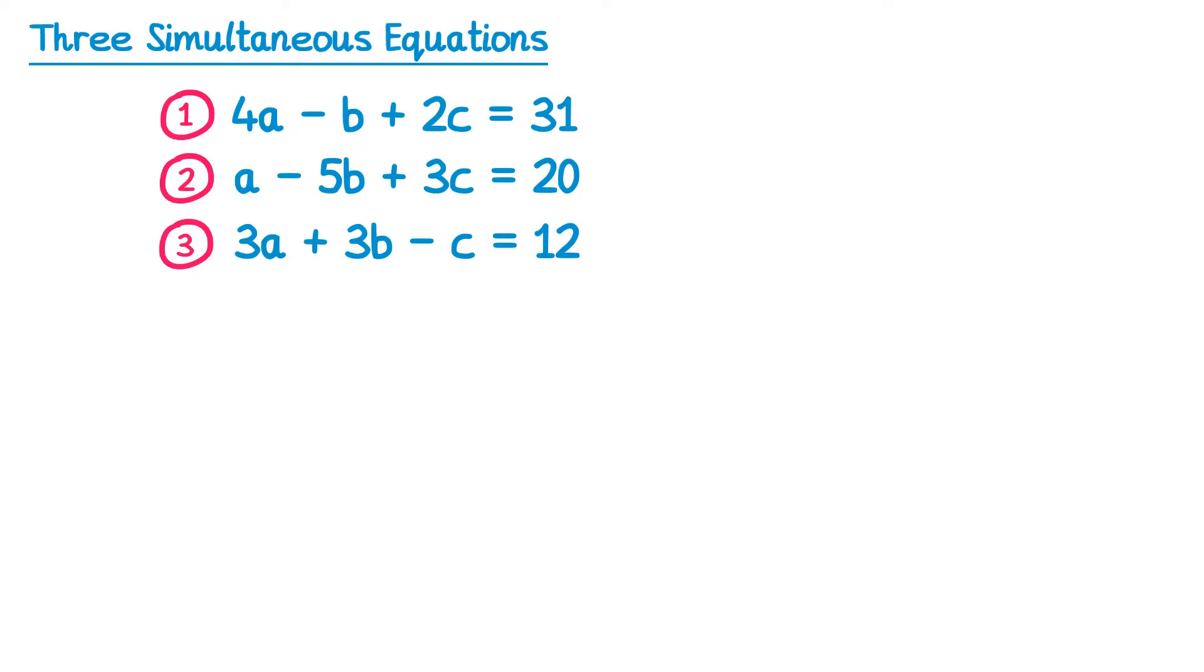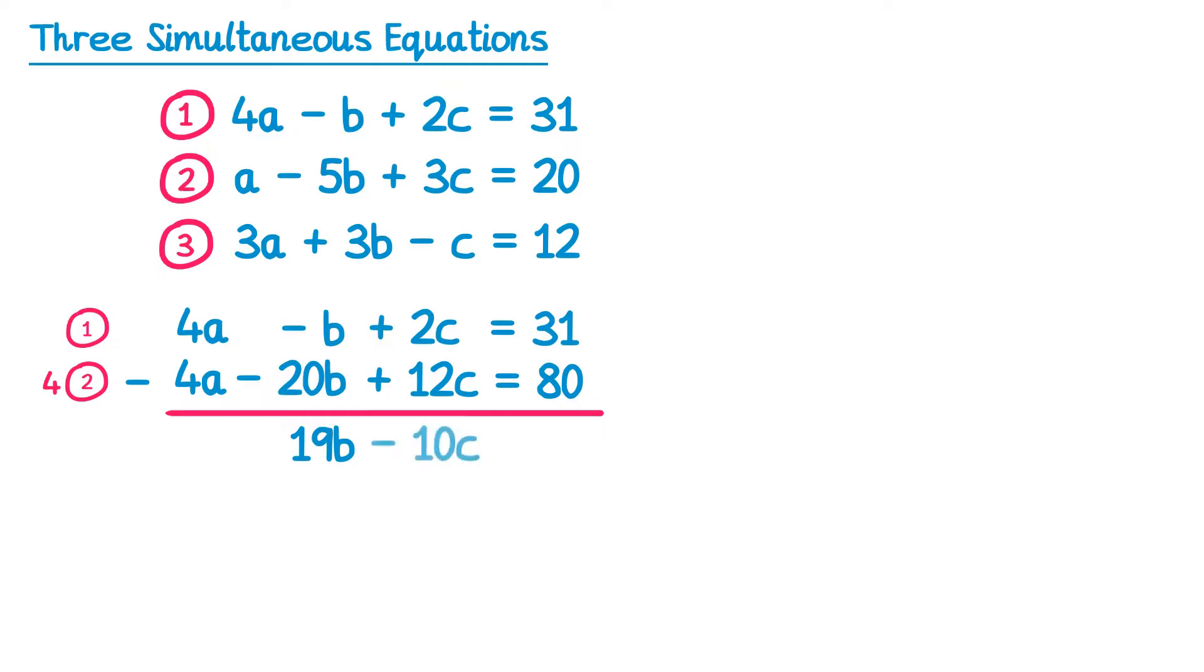I'm going to choose equations 1 and 2 and I'm going to eliminate the letter a. If I'm using 1 and 2 and I want to eliminate a I need to make sure the coefficients match. So in the first one I've got 4a and in the second one I've got a. So what I'll do is I'll keep the first equation the same, equation 1, but then I'll take 4 lots of equation 2. So if I've got 4 lots of equation 2, I've got 4a take away 20b plus 12c equals 80. Now if I just subtract the equations, 4a take away 4a is 0, negative b take away negative 20b, well that's the same as negative b add 20b, so that's 19b. 2c take away 12c is negative 10c, and 31 take away 80 is negative 49.